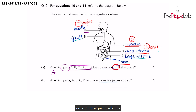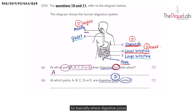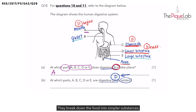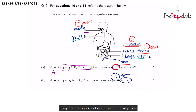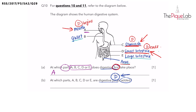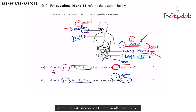Part B: at which parts — A, B, C, D, or E — are digestive juices added? When digestive juices are added to the food, digestion can take place. So asking where digestive juices are added is the same as asking where digestion takes place, because digestion can only take place when digestive juices are added and break down the food into simpler substances. The digestive juices are added at the mouth, stomach, and small intestine — parts A, C, and D. So the answer is A, C, D.